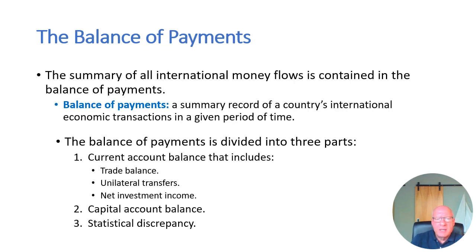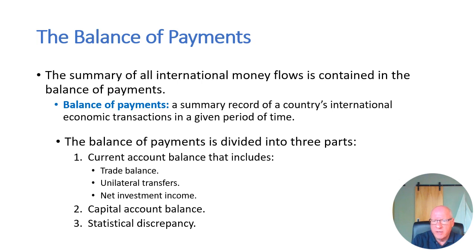Now let's take a look at the balance of payments. The balance of payments oftentimes generates a great deal of controversy. Politicians talk about it; we talk about trade wars based on the balance of payments. But in order to understand whether we're talking about it correctly, we need to understand what it is. It's a summary of all the international money flows — a record of all international transactions during a given time period. We group them under three major categories: the first two are actual real categories, the current account and the capital account, and then the third category is the statistical discrepancy, which is just a balancing tool.